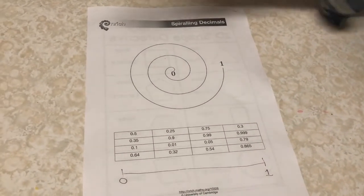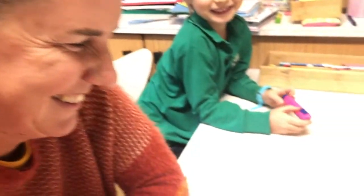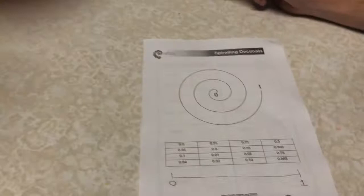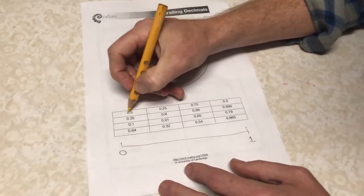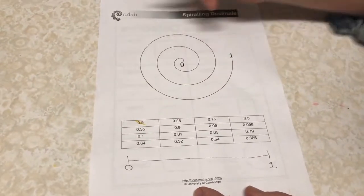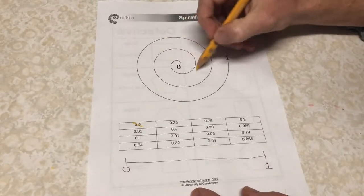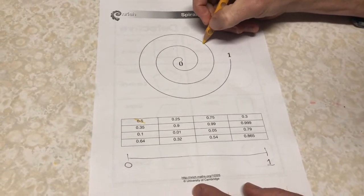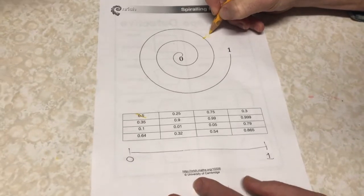So we've got Suze who's going to play today and we are going to have a game so I'm going to go first and I'm going to choose a half so I'm going to cross half off so that no one else can choose it and about halfway around this line I'm going to mark mine.